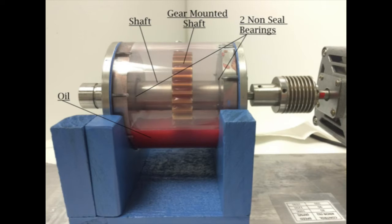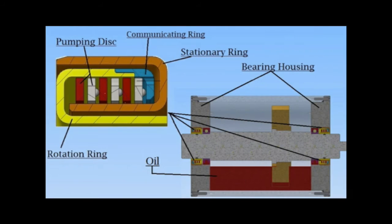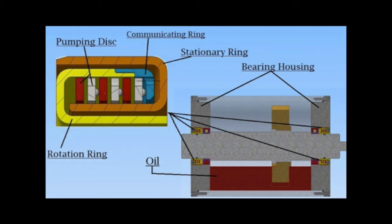Before showing the seals at work, let's examine what comprises a Centrotec seal. The seal consists of four elements. The stationary ring is attached to the bearing housing and therefore does not rotate.